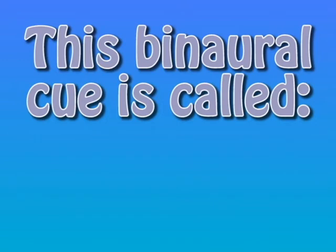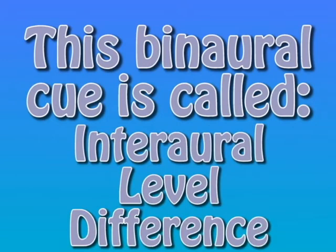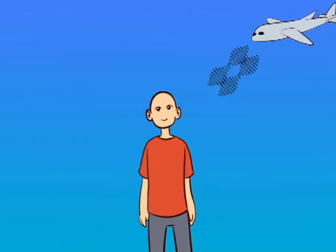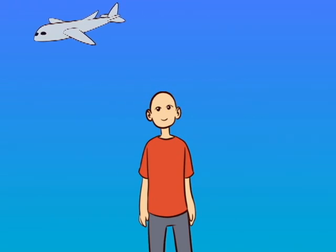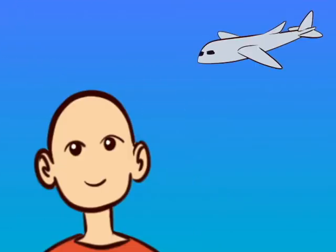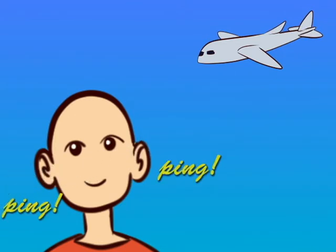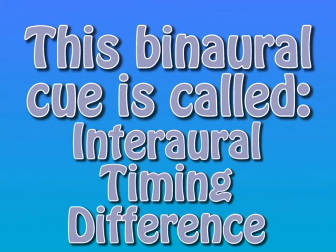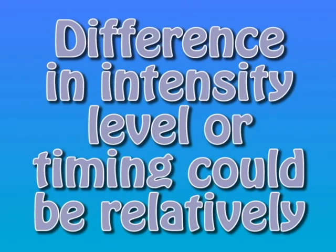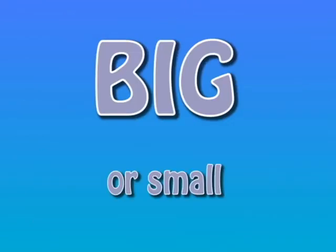This binaural cue is called the interaural level difference. The second sound cue refers to how you localize sound based on the difference in timing between your ears. When sound plays to the right or left of you, the sound reaches the ear closest to the sound source sooner. This binaural cue is called the interaural timing difference. Depending on how close the sound is to each ear, this could be a relatively big or small difference.